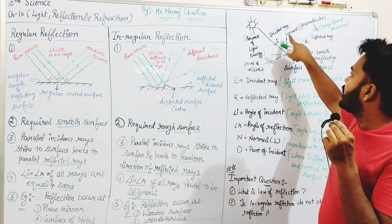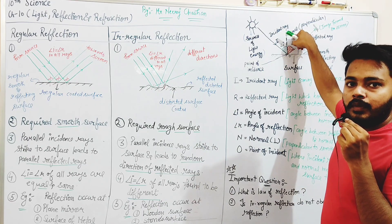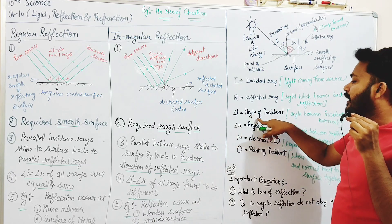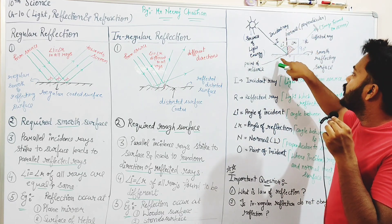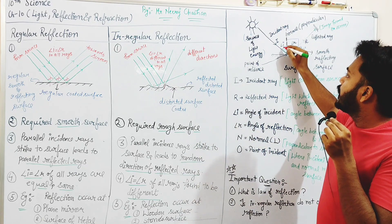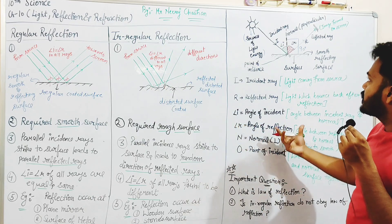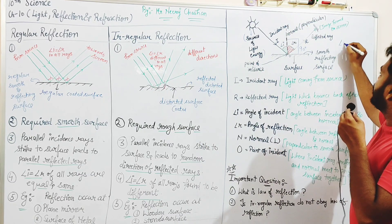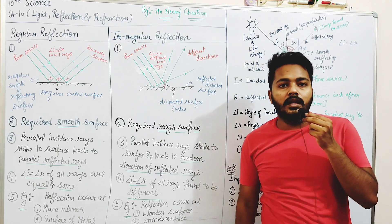There is a perpendicular to the surface which is called the Normal. Angle I is also called the Angle of Incidence — it is the angle between the incident ray and the normal, which is perpendicular to the surface. Similarly, Angle R is the Angle of Reflection, which is the angle between the reflected ray and the normal. Angle I is equal to Angle R — the Angle of Incidence is equal to the Angle of Reflection; they make the same angle.